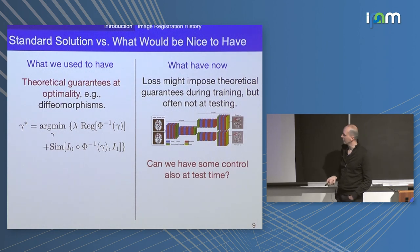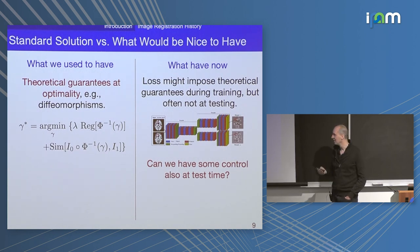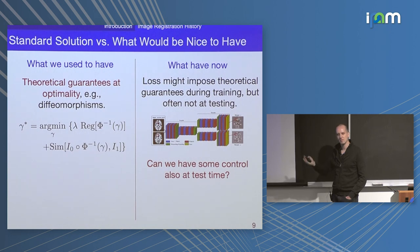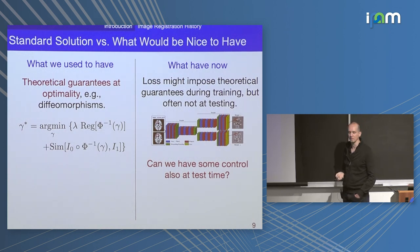For example, people used to make a big deal out of having diffeomorphic transformations. The models I'm going to talk about will have this guarantee. If you do something and predict with regression, you may want to have control over regularity of transformations at test time and not only at training. If you construct the model in the appropriate way, I think you can do this.